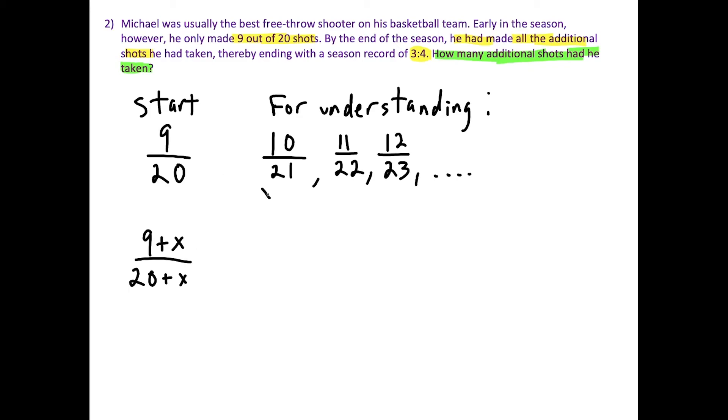And you could see here, this is kind of like, it would be like if x is equal to 1, we have 9 plus 1 over 20 plus 1. This would be x equals 2, x equals 3. But we need to find the exact fraction in the list that reduces to 3 over 4. So we need this to be equal to the ratio of 3 to 4. And just know, 3 to 4 in a fraction form is equal to 3 over 4.